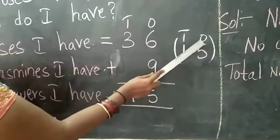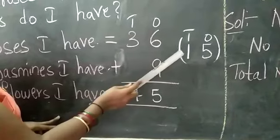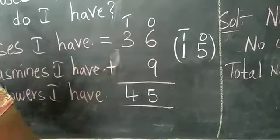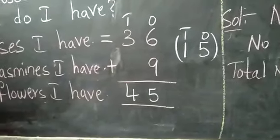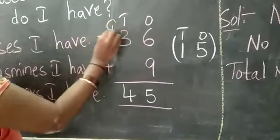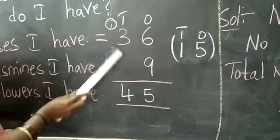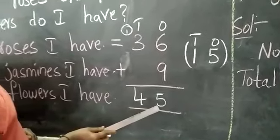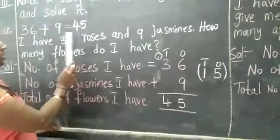So 15. So in 1's place, 5. 10's place you have to carry out this 1 children. Carry out this 1. So 1 plus 3 is 4. 45. Right here 45.